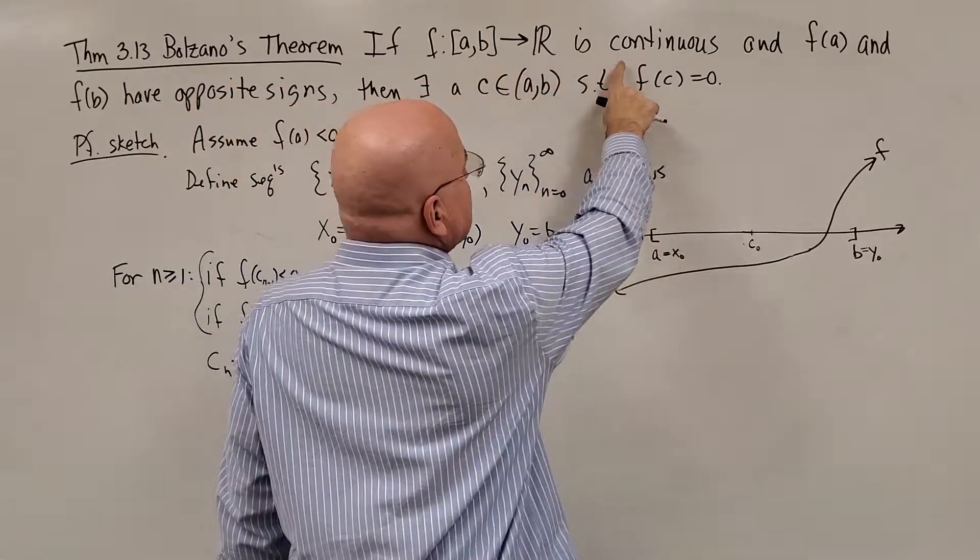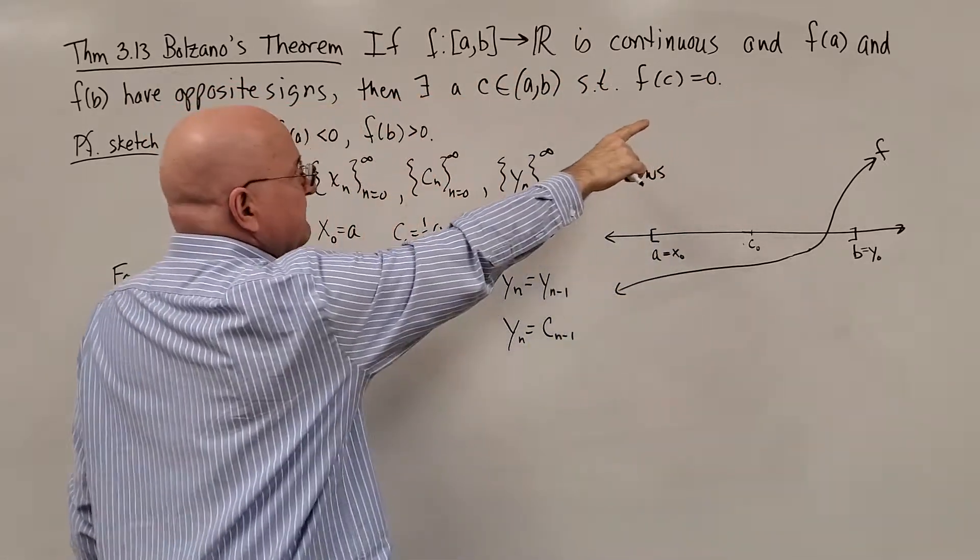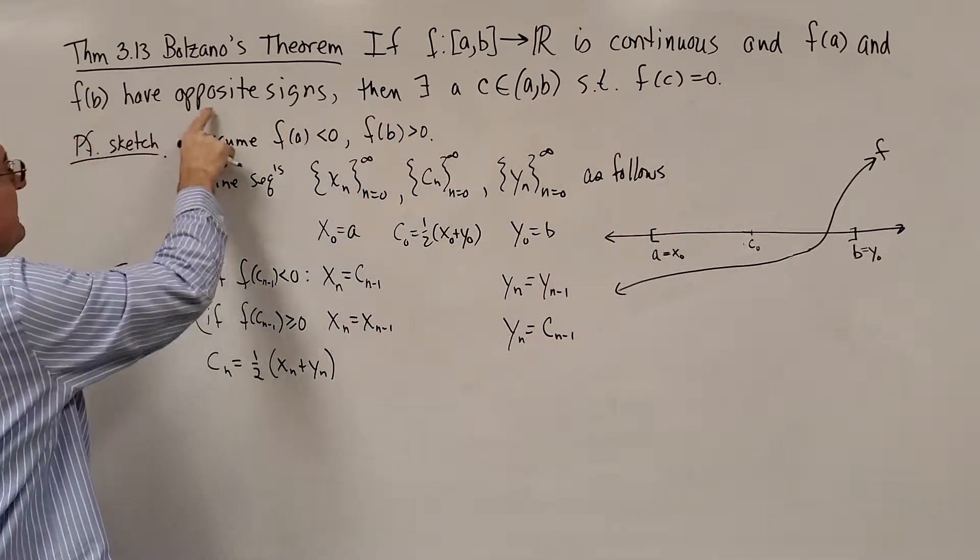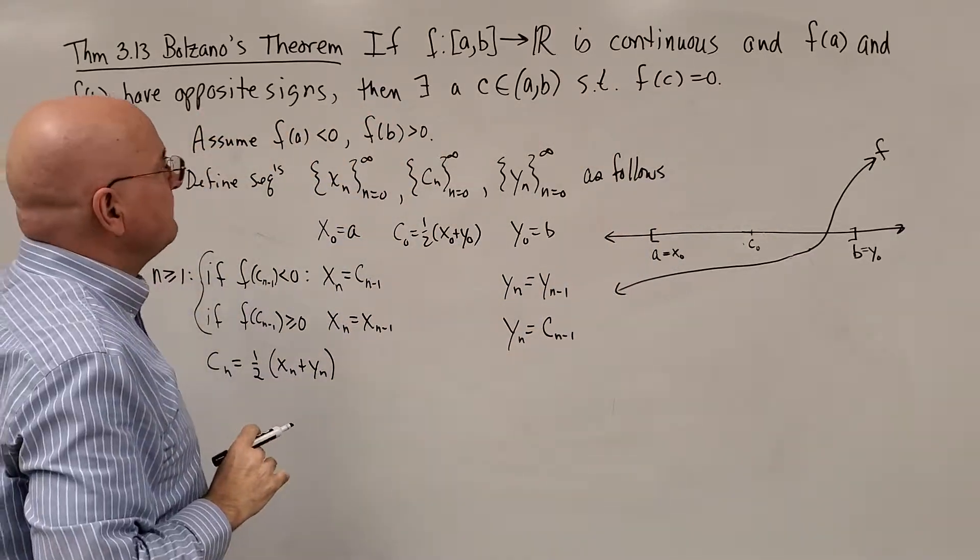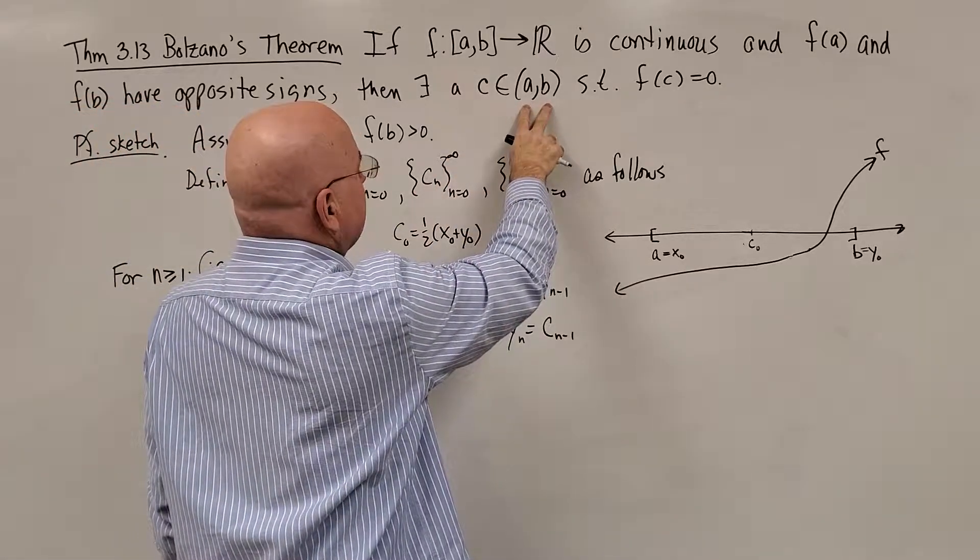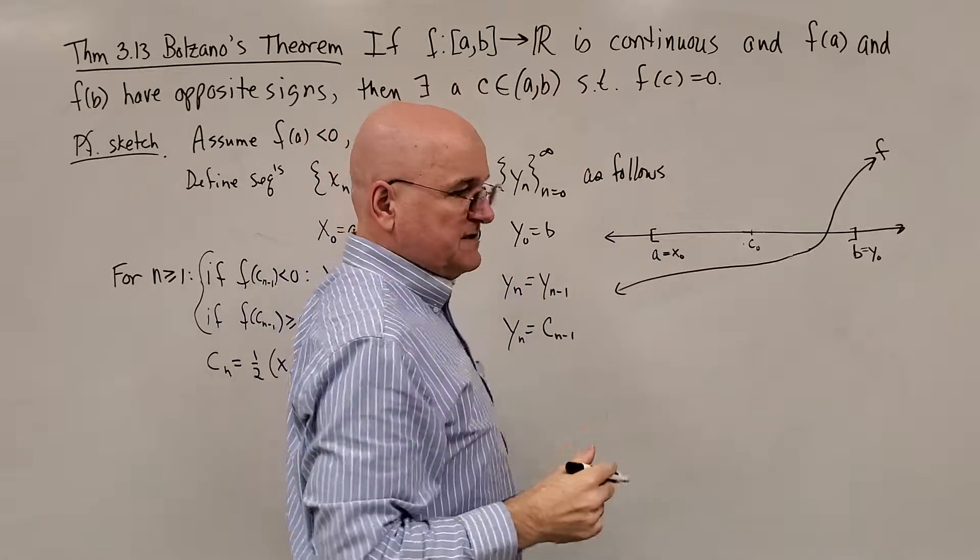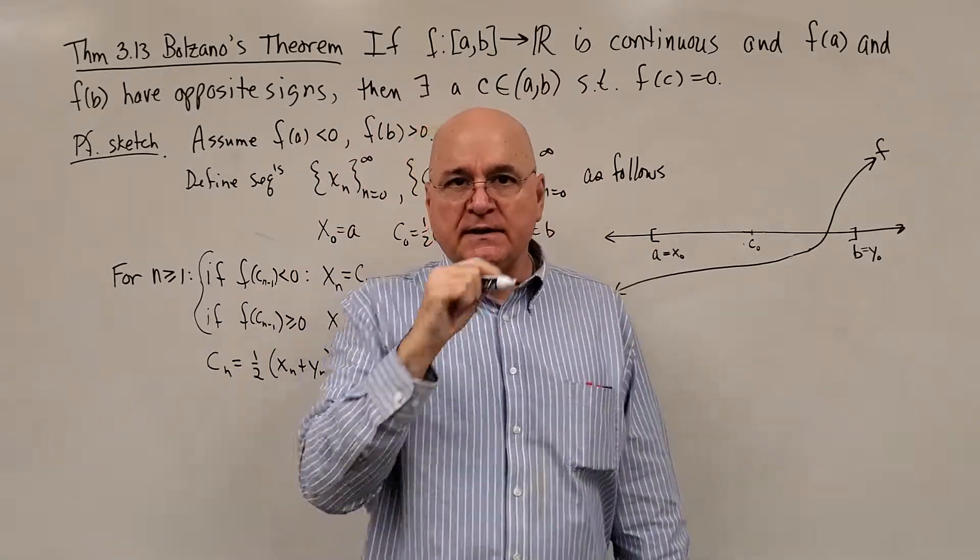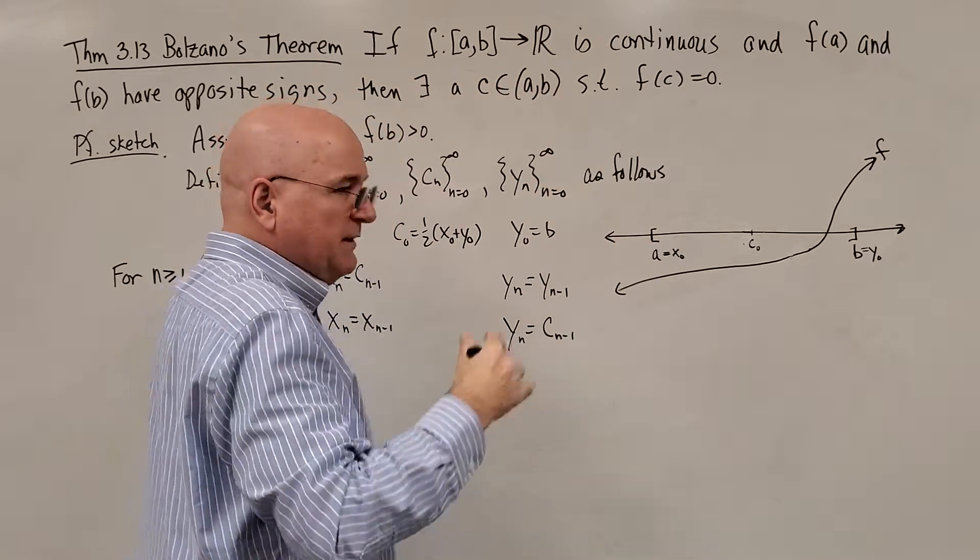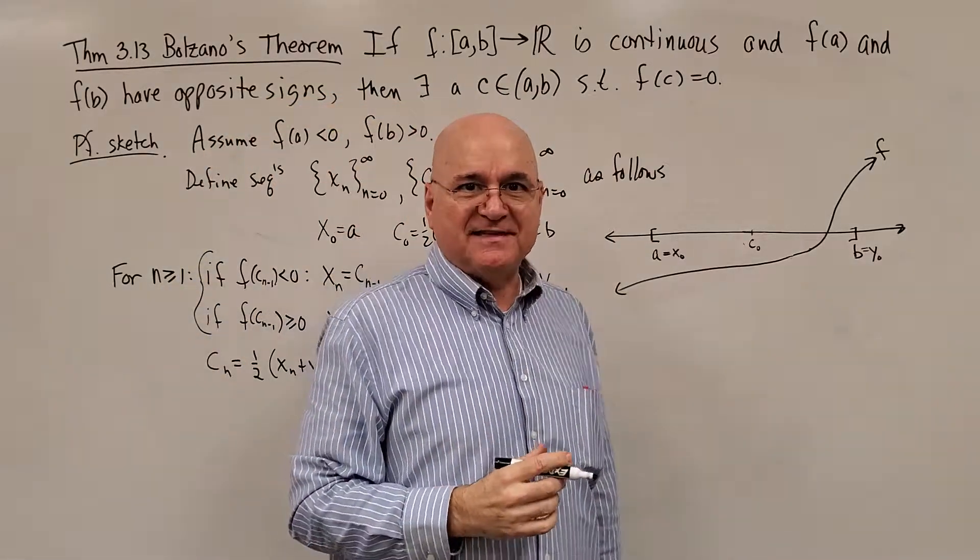If f is continuous and the value of the function at a and the value of the function at b have opposite signs, then there is a c strictly in between a and b where f(c) equals zero. So we found a zero of that function. It would be an x-intercept if we graphed it.